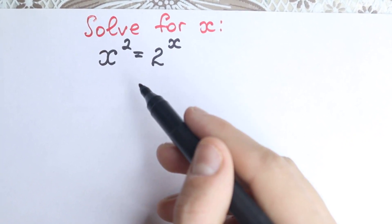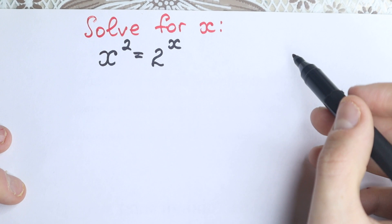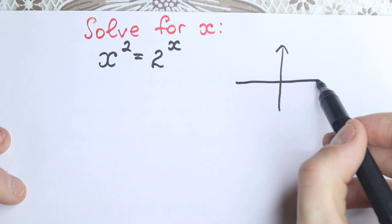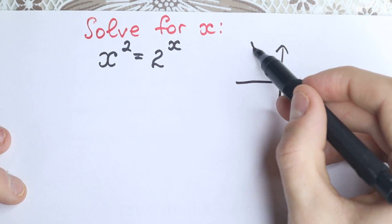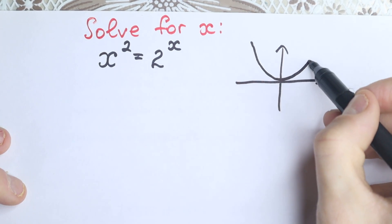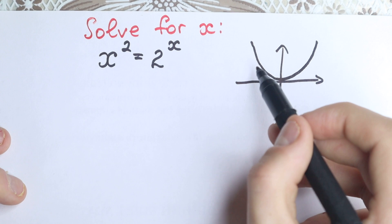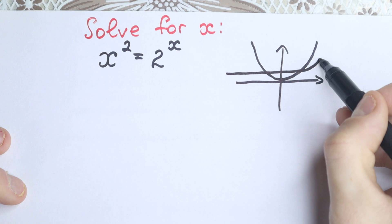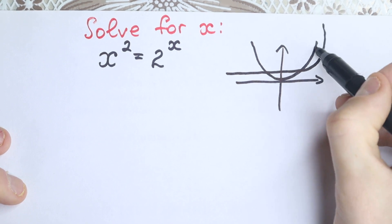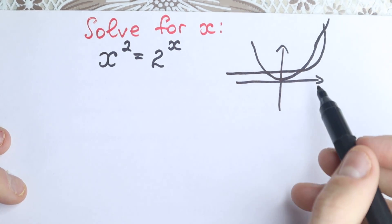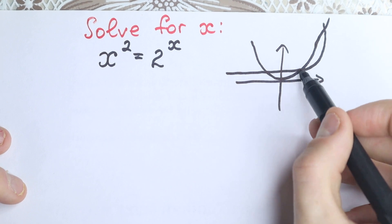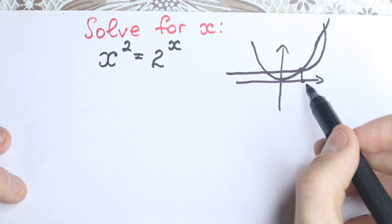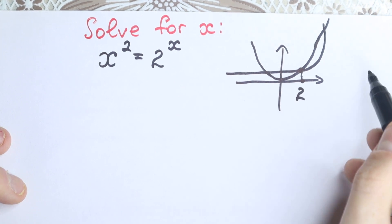In this video I'm going to show you this solution. But before solving this, I want to start with this graph right here. We have x squared — this is our parabola — and the second function is our exponential function. As you can see, a lot of students know that x equals 2 is an obvious solution right here.